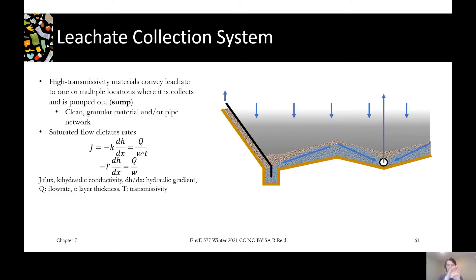Because we want the leachate to flow easily to either a drainage pipe or a sump where it's going to be pumped out, we want a highly hydraulically conductive material. As a contrast to the liner, the leachate collection system is very high conductivity, typically gravel.